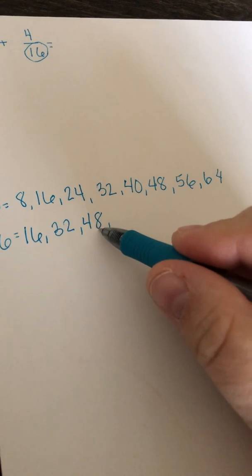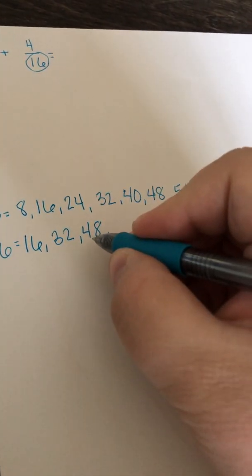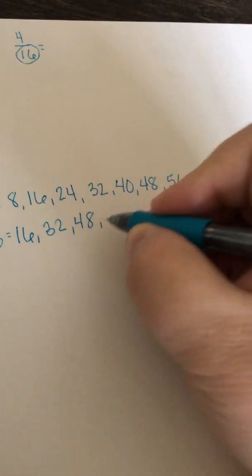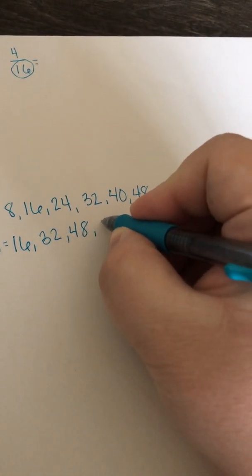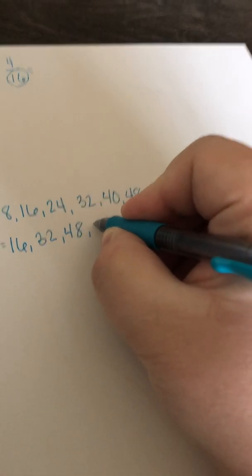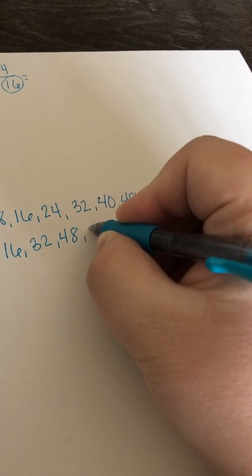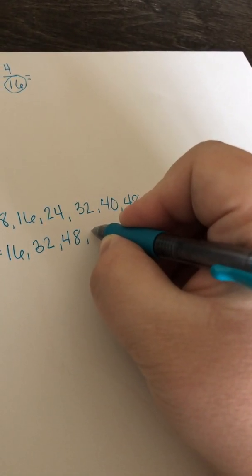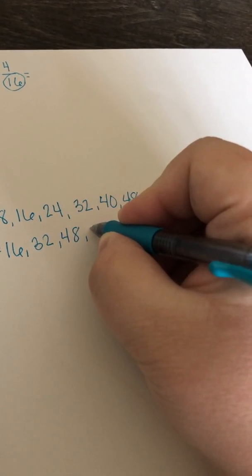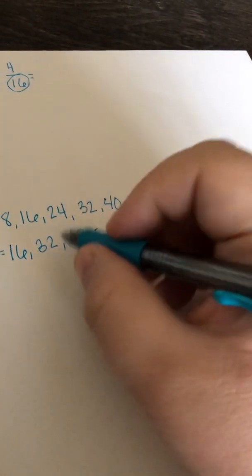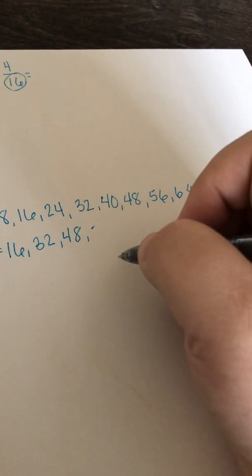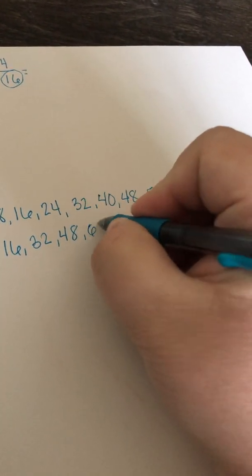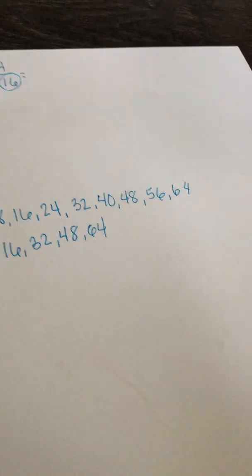10 more would be 58, plus 6 more would be 64. Sorry about that. We're going to stop there.